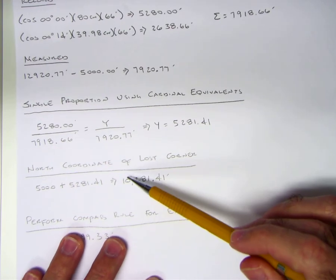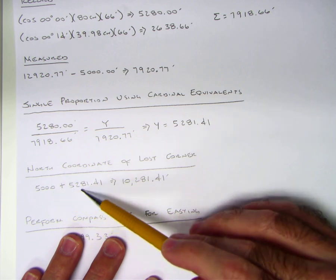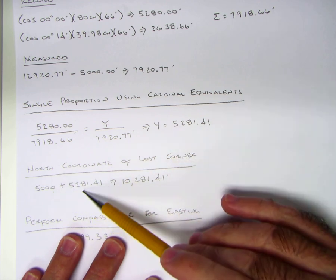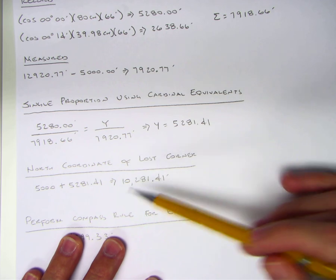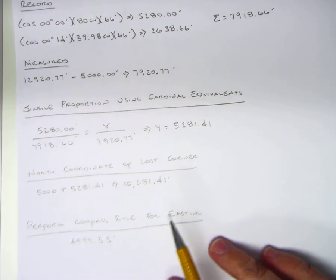So the north coordinates of the lost corner would be just the northing of the southernmost point which is 5000 plus the proportion 5281.41 so that's 10281.41. If you recall that is the exact coordinates by using the compass rule.